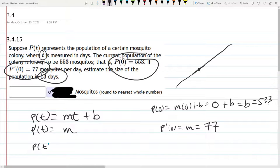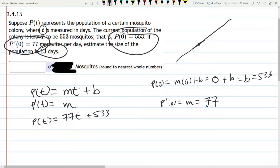Put all this together, we have our P of t function equals 77t plus 533. And they, in the question, asked us how many mosquitoes in 13 days. So you're just plugging in 13.